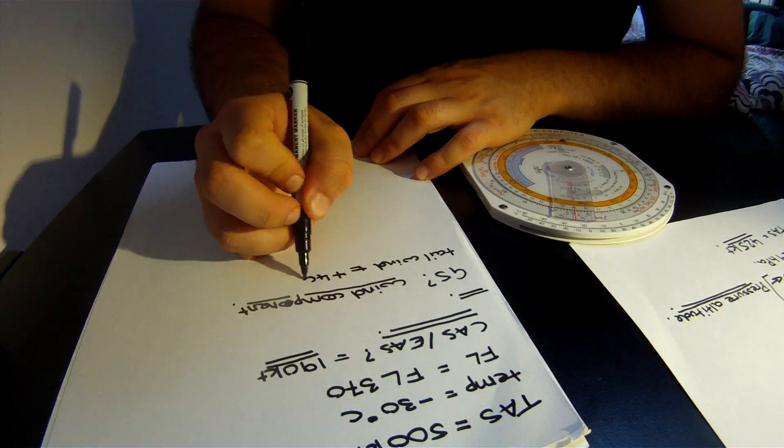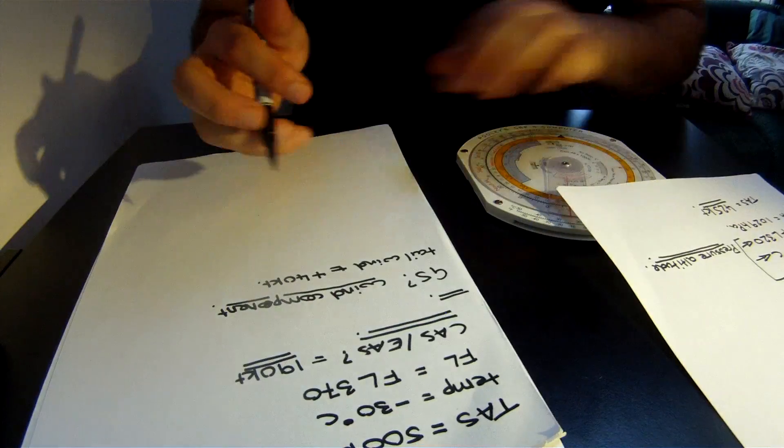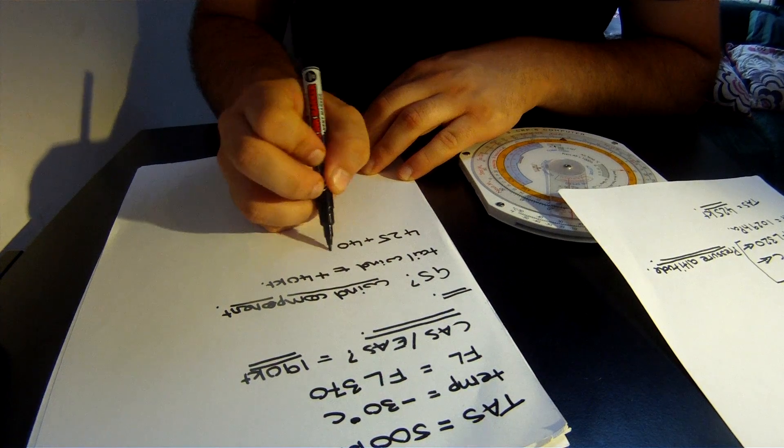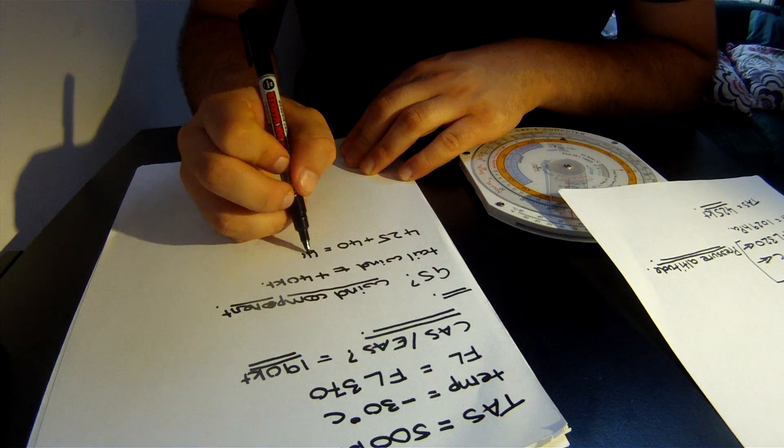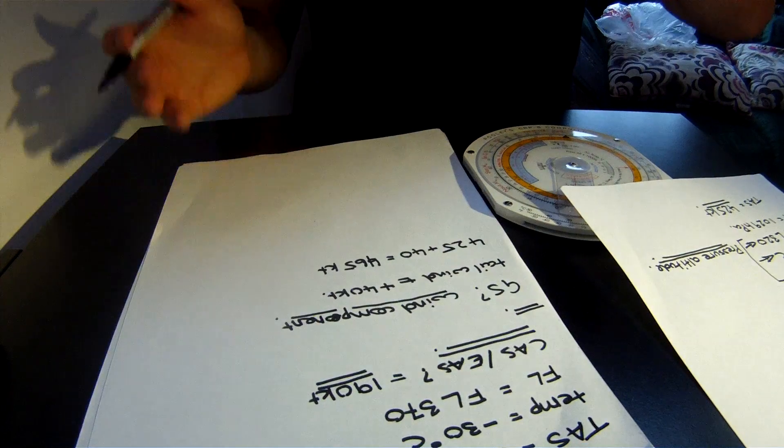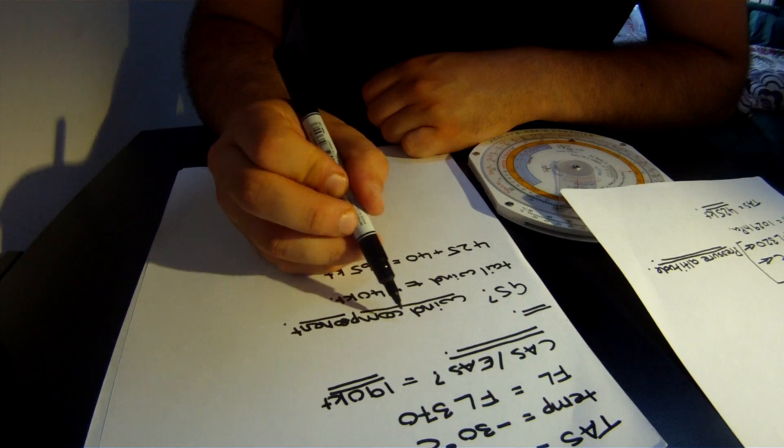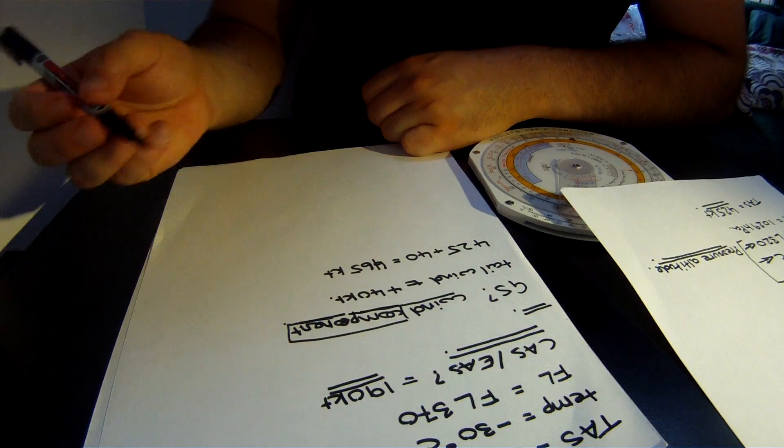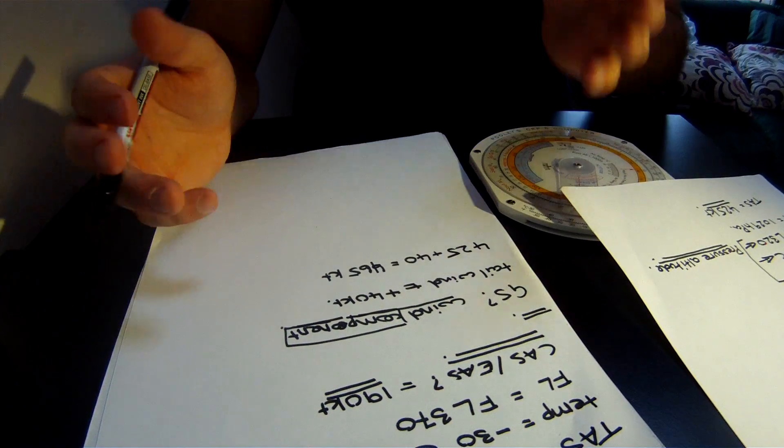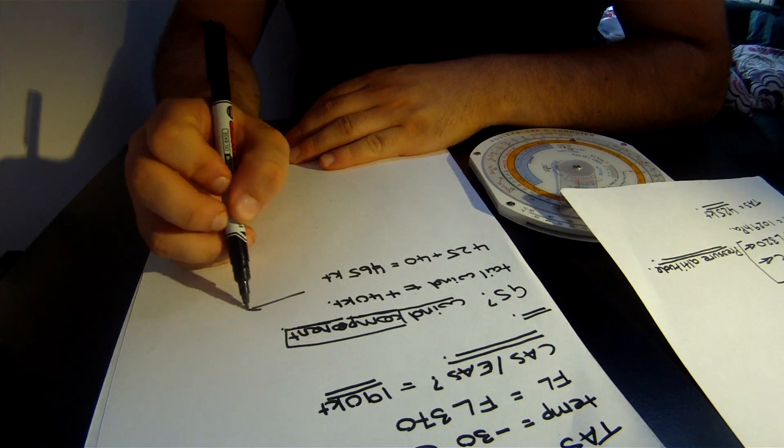Let's say they ask you for the wind component, they give you the wind component being a tailwind of plus 40 knots, and you've got a TAS that we calculated earlier, 425 knots. It can't get simpler. It's just adding them up. This is the component, remember—which means it might not necessarily be the total velocity of the wind, just the velocity relative to the direction of travel of the aircraft.